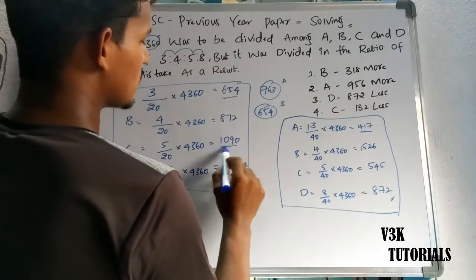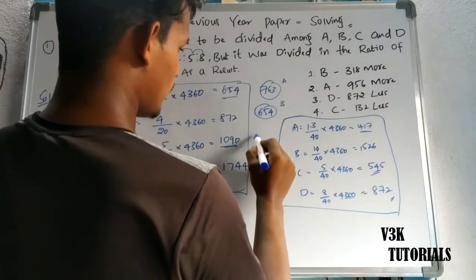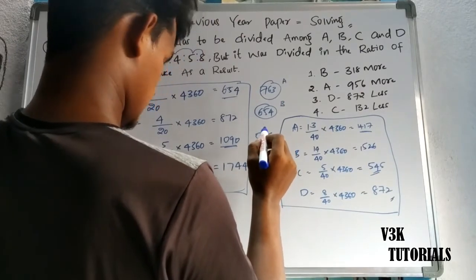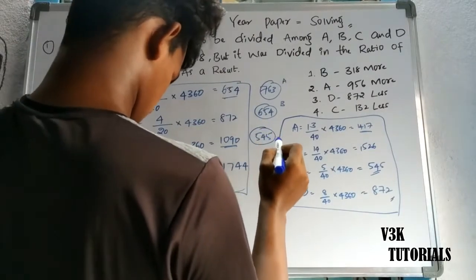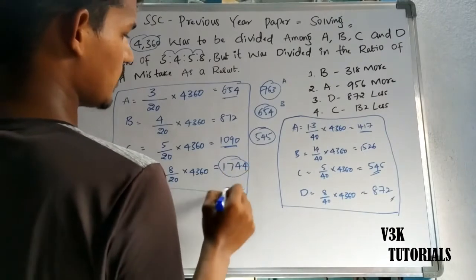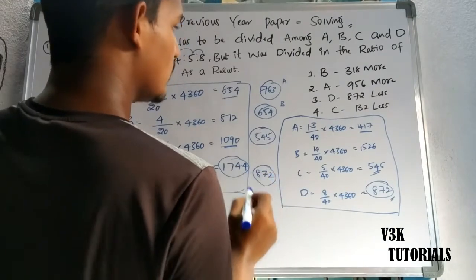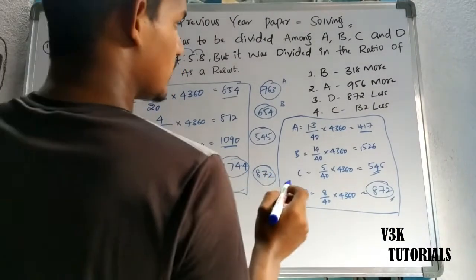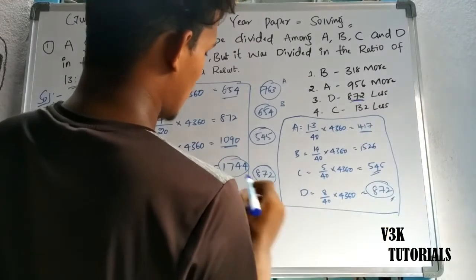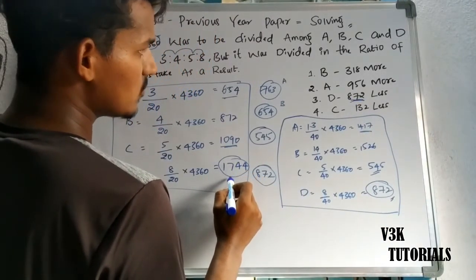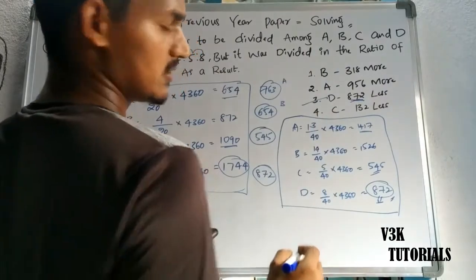C's difference: correct share is 1,090, but the mistaken share gives 545. So the difference is 545. For D, the correct share is 1,744 and the mistaken share is 872. The difference is 872. D received 872 lesser. So option D is the correct answer.